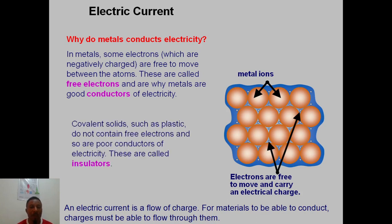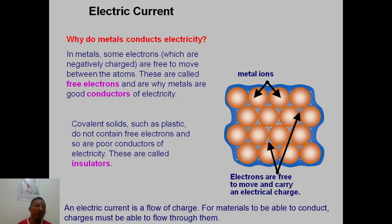Covalent solids such as plastic do not contain free electrons and are poor conductors — they cannot conduct electricity. That means where you don't have free moving electrons, you have an insulator. But where you have free moving electrons, you have a conductor.